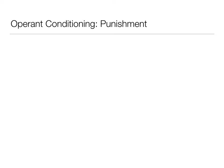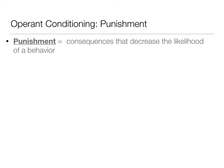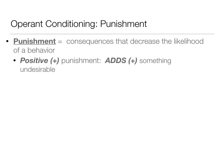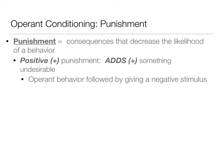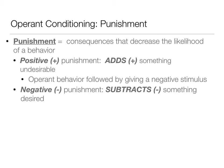If a behavior is less likely to occur, that's a punishment. Any consequence that decreases the likelihood of behavior happening again is punishment. Positive punishment — though it sounds like an oxymoron — means adding something undesirable, like a spanking: something adverse has been added, so the behavior is less likely to happen again. Negative punishment is like grounding: subtracting something desirable. Just like in reinforcement, when something's added it's positive; when something's subtracted, it's negative.